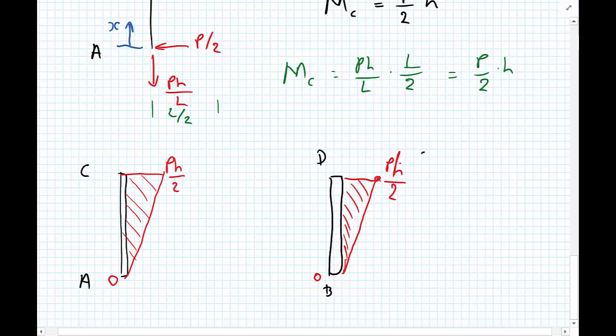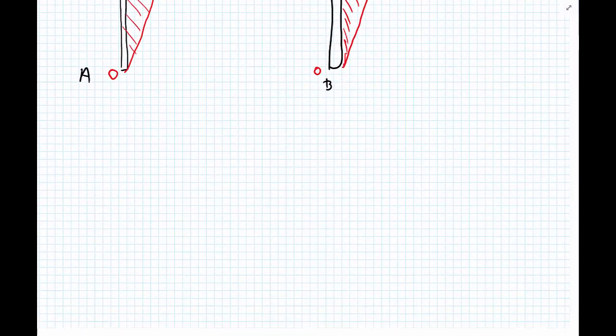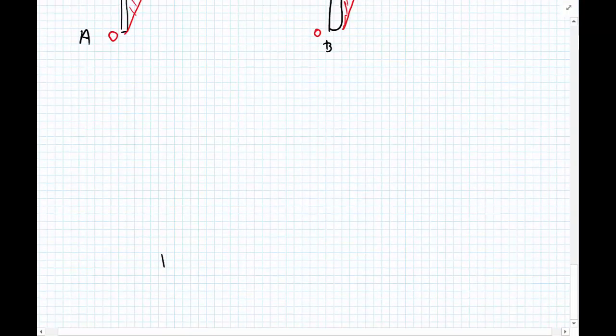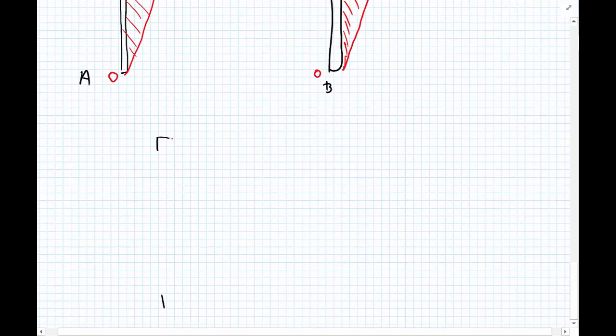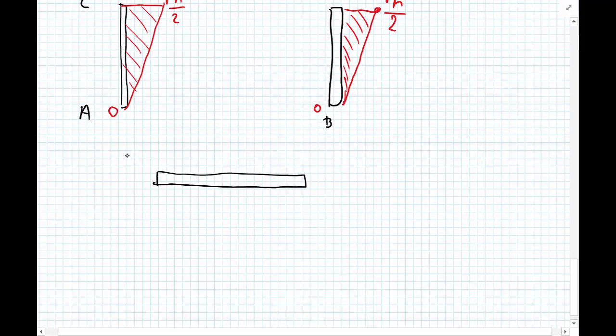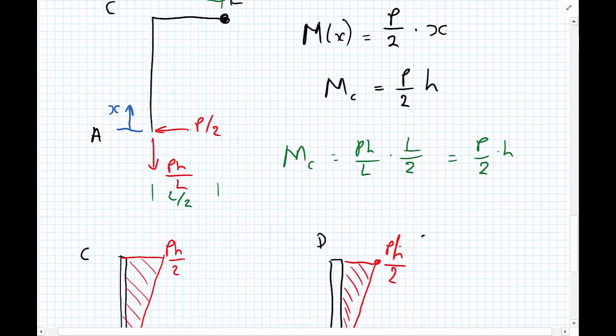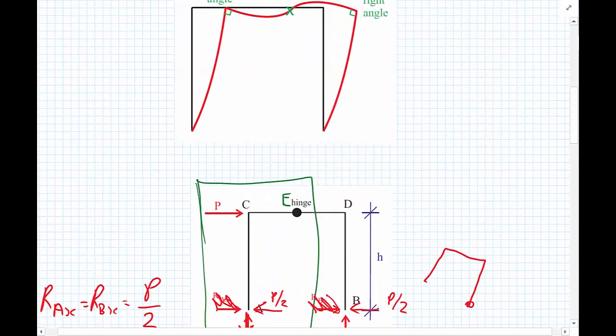And now looking at the beam, so we have C, D, and the hinge in the middle, E. So we know that the value is 0 here at E. So we calculated, and let's remind ourselves from the deflected shape.